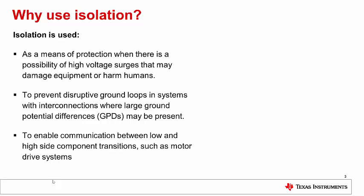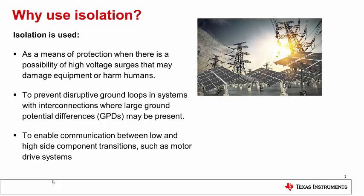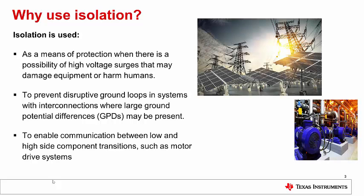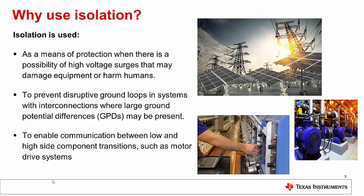Why use isolation? Isolation is used as a means of protection when there is the possibility of high voltage surges that may damage equipment or harm humans. It also prevents disruptive ground loops in systems with interconnections where large ground potential differences, or GPDs, may be present, and to enable communication between low and high side component transitions, such as in motor drive systems.